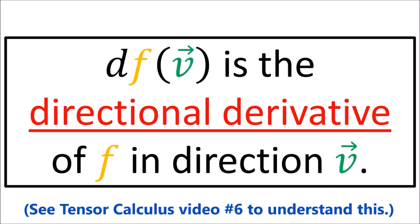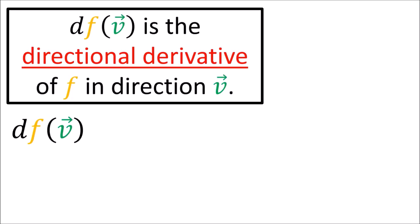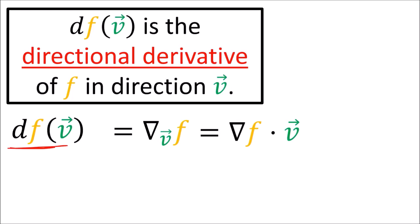When the covector df acts on the vector v, it gives us the directional derivative of f in the direction of the vector v. Another way of writing the directional derivative of f relative to a velocity vector v is that we can just take the dot product between the gradient of f and the velocity vector v. So on the left we have df acting on a vector v, and on the right we have the gradient of f with a dot product acting on the vector v.